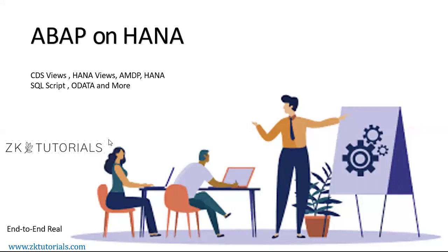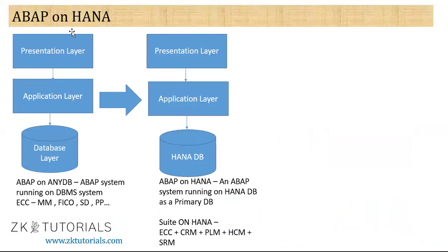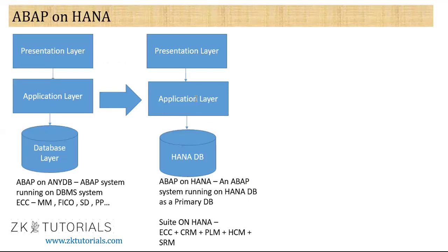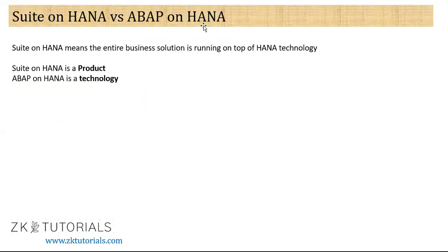In the last couple of sessions we have discussed about inline declarations and new syntax. In the last session we discussed about Suite on HANA and ABAP on HANA versus Suite on HANA. What is ECC? ECC is a solution and it stands for Enterprise Core Components. Suite on HANA means the entire business solution is running on top of HANA technology. Suite on HANA is a product and ABAP on HANA is a technology.